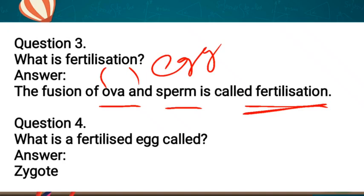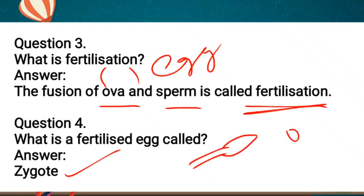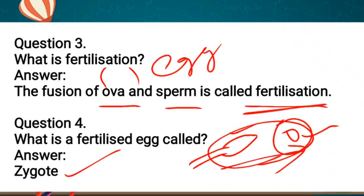Question number 4: What is a fertilized egg called? Jab egg fertilize ho jata hai toh use kya bolte hain? Zygote. Sperm mein ek nucleus hota hai, aur egg mein bhi ek nucleus hota hai. Jab yeh dono fuse ho jaate hain, toh yeh do nucleus milke ek single nucleus ban jaata hai — use zygote bolte hain.